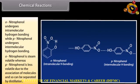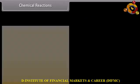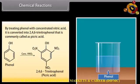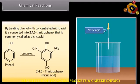By treating phenol with concentrated nitric acid, it is converted into 2,4,6-trinitrophenol, commonly called picric acid.